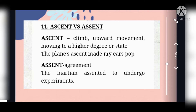The next difference is 'ascent' versus 'assent'. 'Ascent' means a climb, upward movement, or moving to a higher degree or state. For example: The plane's ascent made my ears pop. The second, 'assent', means agreement. An example for this: The Martian assented to undergo the experiment.